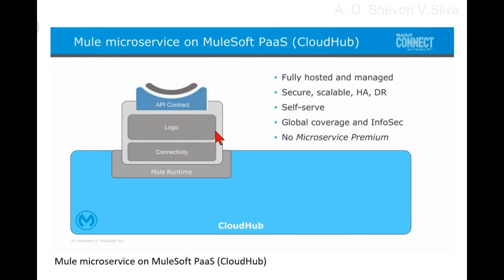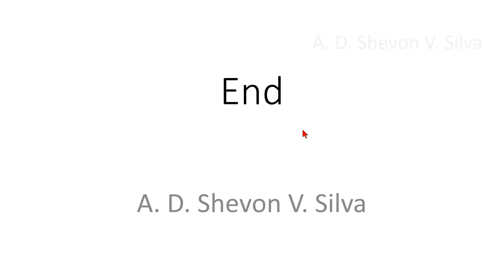With the API contract — the API contract interacts with the Mule runtime, and your runtime interacts with the Cloud Hub. This is the end of my presentation. Thank you very much for watching.